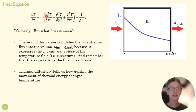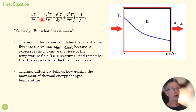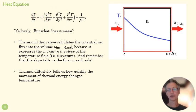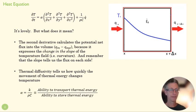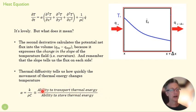Thermal diffusivity tells us: given a significant difference in flux on the two sides of the cube, how much will that actually change the temperature? A big k means a lot of thermal energy movement; a small ρ·c means it won't absorb energy well, so temperature rises quickly. In short: k is the ability to move thermal energy; ρ·c is the ability to store thermal energy. If k is big, temperature changes quickly; if ρ·c is big, temperature changes more slowly. And there it is — that's the heat equation.